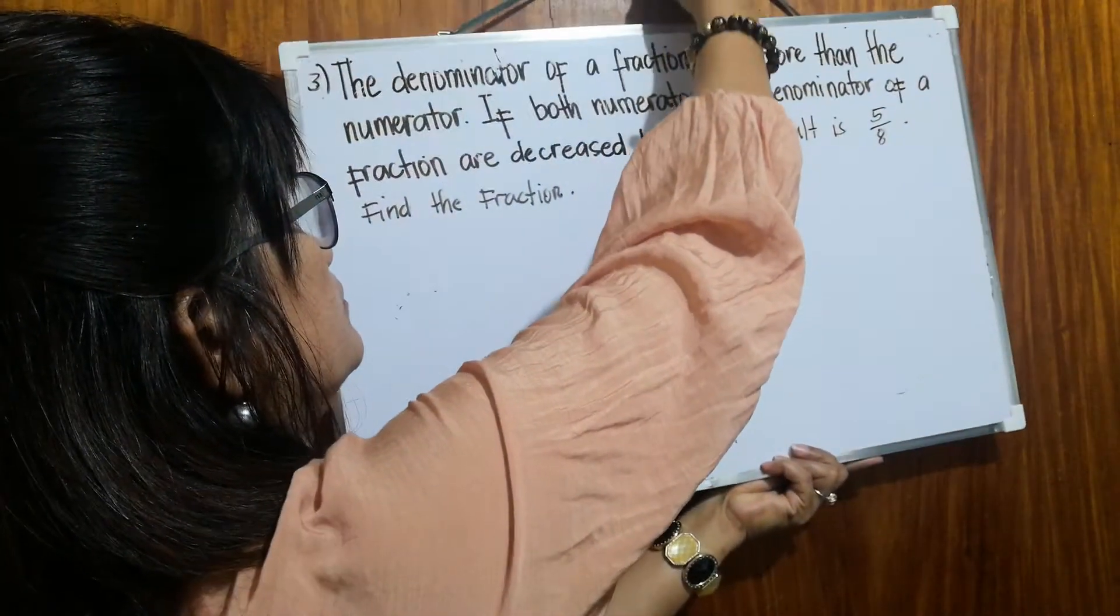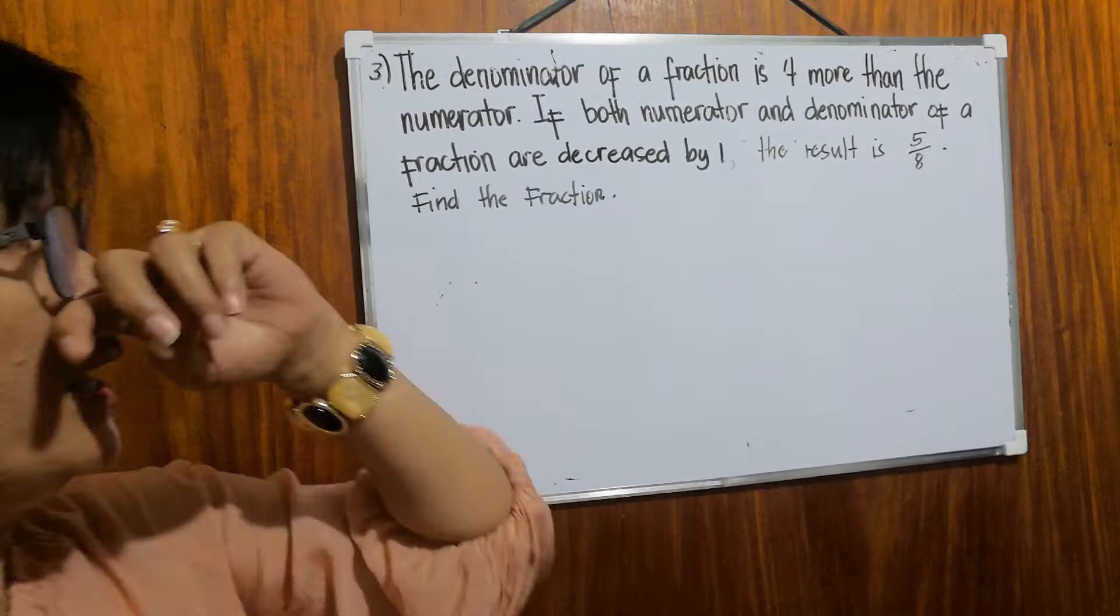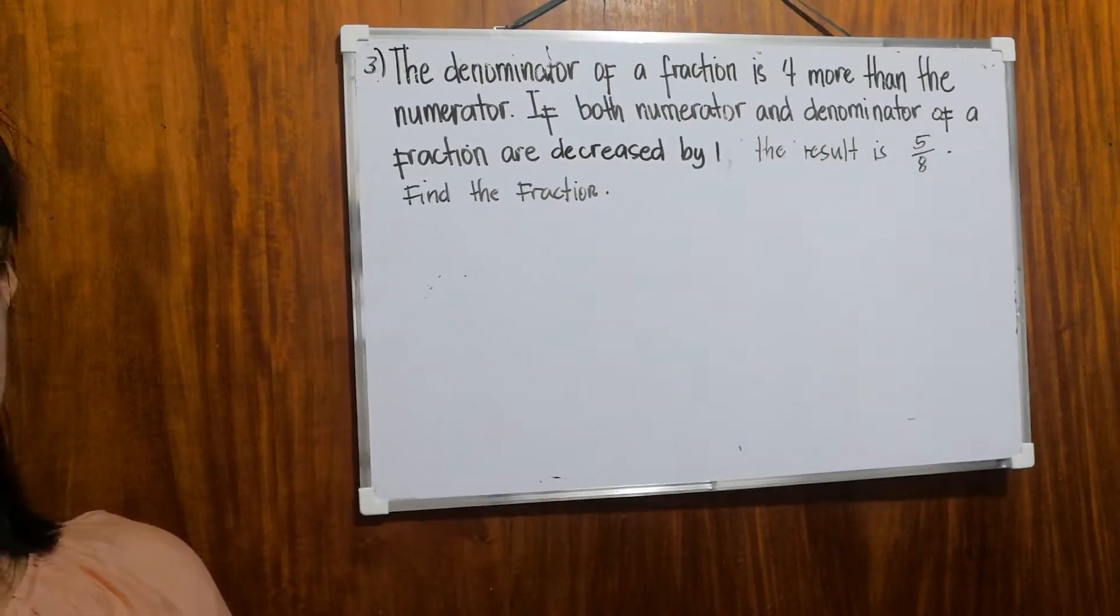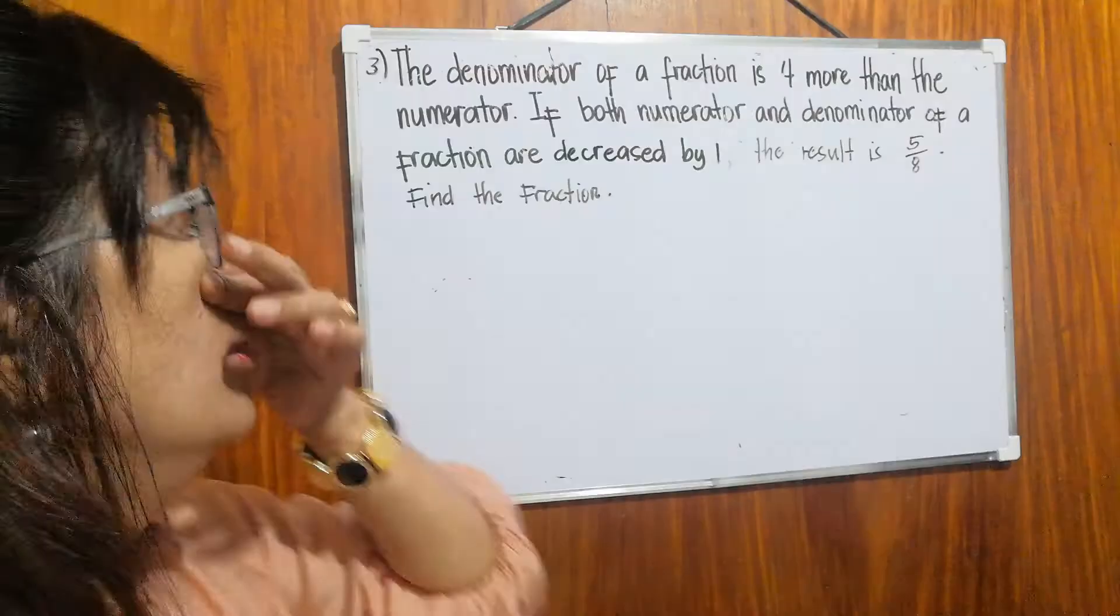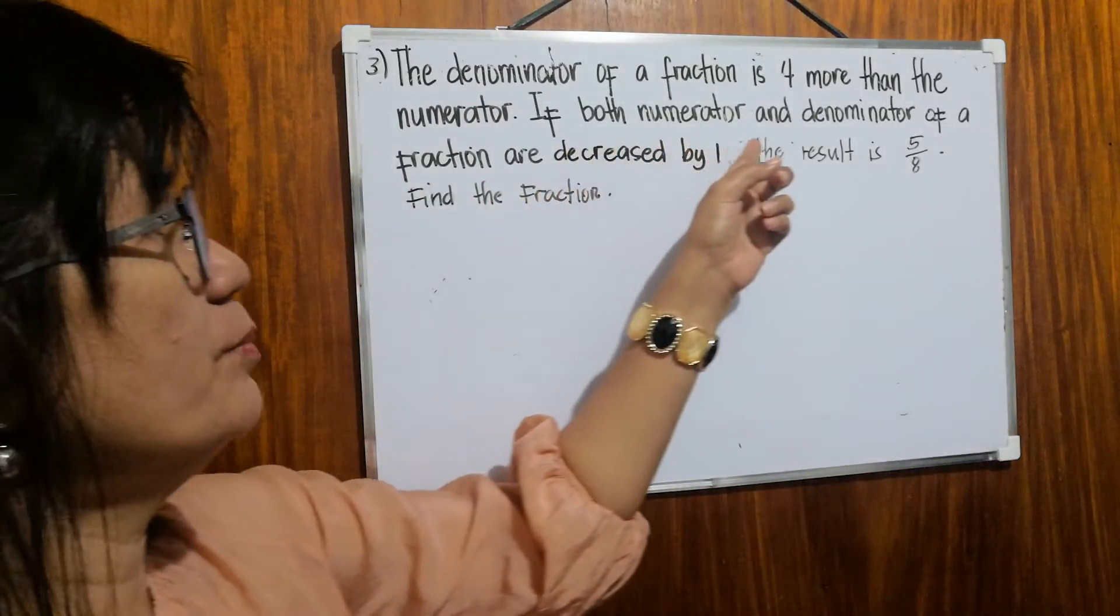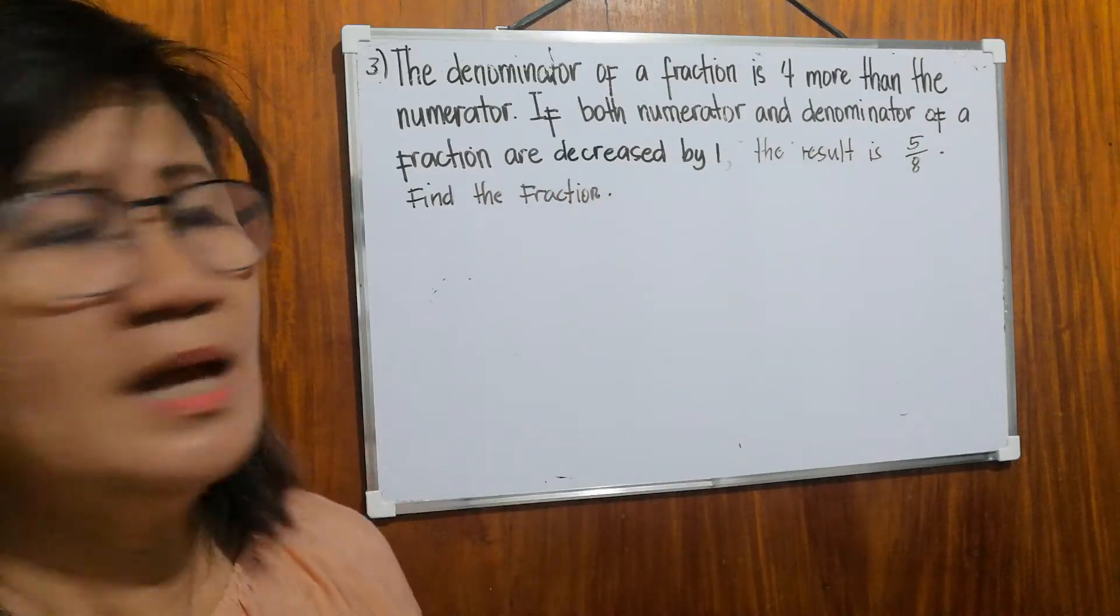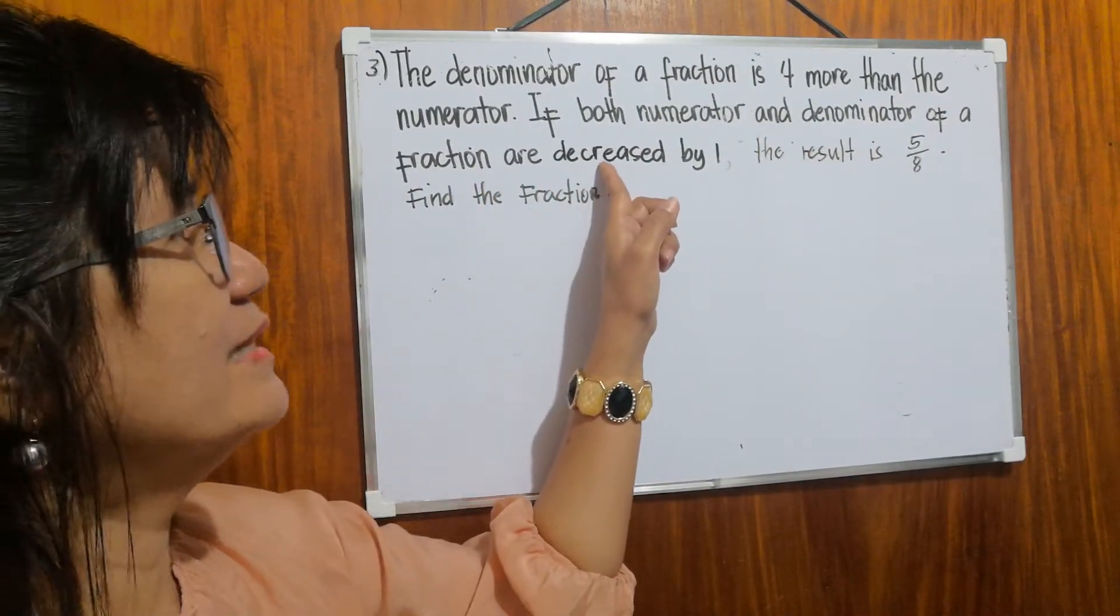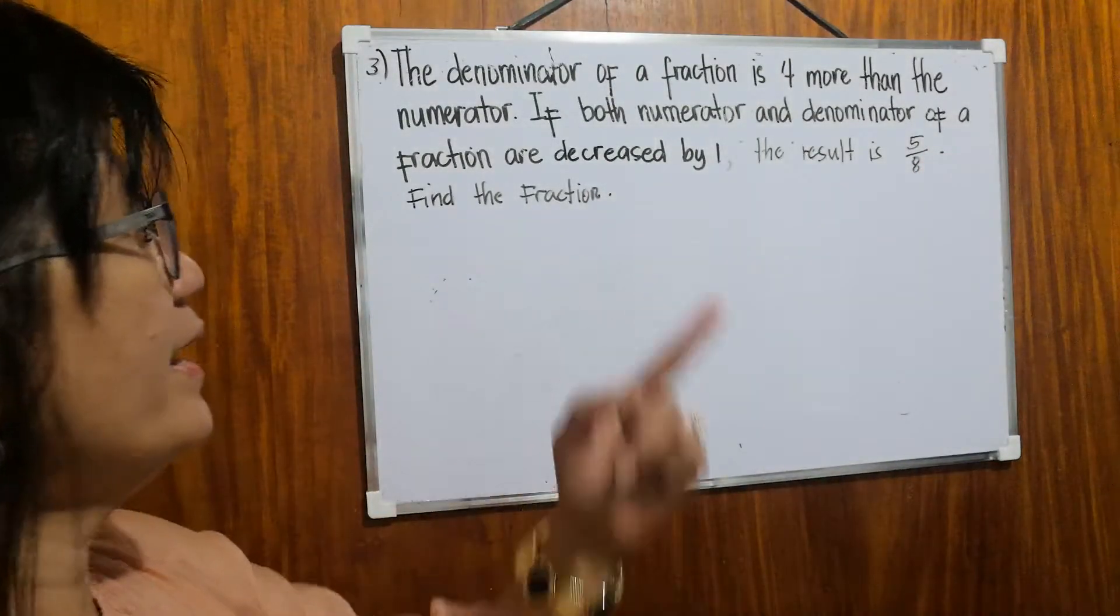Let's have the last example. The denominator of a fraction is four more than the numerator. If both the numerator and denominator of a fraction are decreased by one, the result is five over eight. Find the fraction.